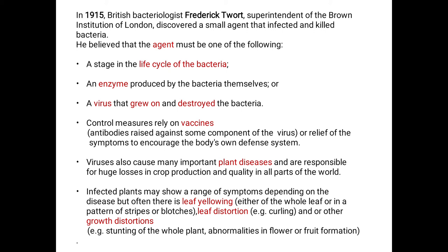Viruses also cause many important plant diseases and are responsible for huge losses in crop production and quality in all parts of the world. Infected plants may show a range of symptoms depending on the disease, but often there is leaf yellowing — the green leaf turning yellow, either of the whole leaf or in a pattern of stripes or blotches.